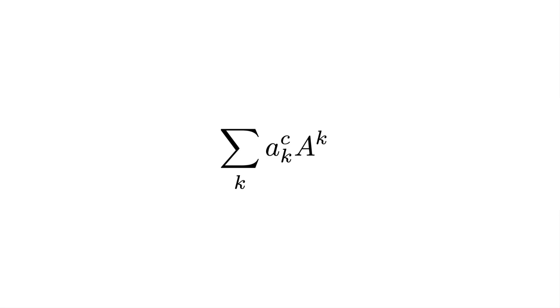This equation gives the generalized formula for the weighted feature map. A^KC is the weight we apply to feature map K. All CAMs follow this same procedure, using a different approach to calculating the weights. For GradCAM, they are based on the gradients of the logit for class C. To understand how we calculate the weights, let's take a closer look at one of the feature maps.